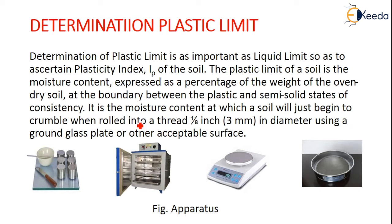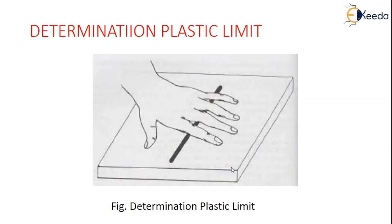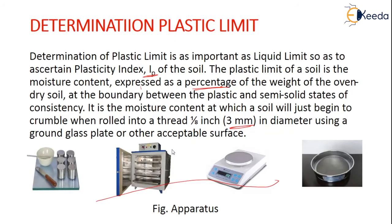For the determination of plastic limit, which is important to ascertain the plasticity index IP of the soil: the plastic limit is the moisture content expressed as a percentage of the weight of oven-dry soil at the boundary between the plastic and semi-solid state. It is the moisture content at which a soil will just begin to crumble when rolled into a thread of 3 mm in diameter — or one-eighth of an inch — using a ground glass plate or any acceptable surface.